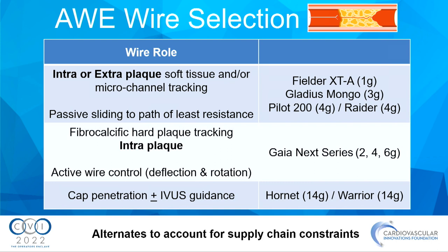The first category is intraplaque or extraplaque jacketed wires. These wires are meant to find the path of least resistance — they are introduced into the plaque and find the path whether intraplaque or extraplaque; it's irrelevant. They have no tactile feedback. There are tapered wires, stiff wires — all jacketed. Some are designed to knuckle, some are not, but the point is they're slippery, you can't feel them, and they find the path of least resistance.